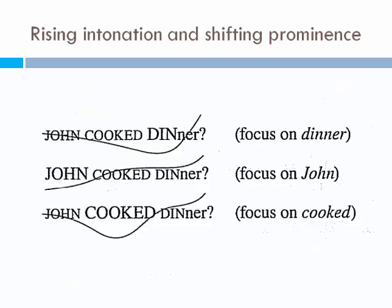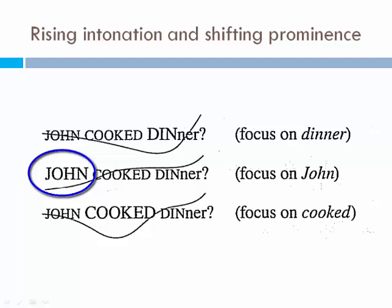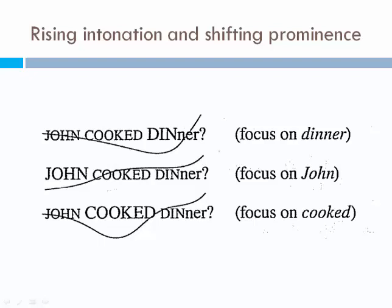Rising intonation and shifting prominence — depending on the emphasis you give, the meaning of the sentence is going to change. For example: 'John cooked dinner' — focus on dinner. Now let's shift prominence to John: 'John cooked dinner.' But now we want to emphasize the action of cooking: 'John cooked dinner.' Like, he didn't buy it — he cooked it. So it's very important that we know which word to emphasize and which intonation pattern to use to convey the message we want.